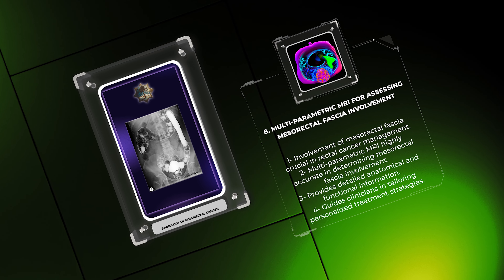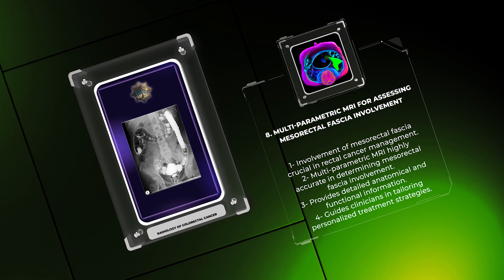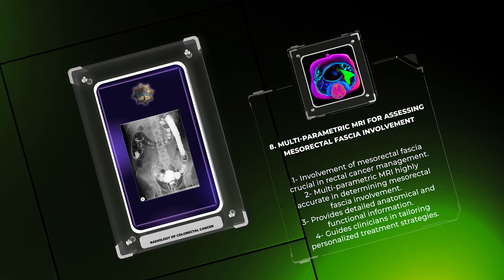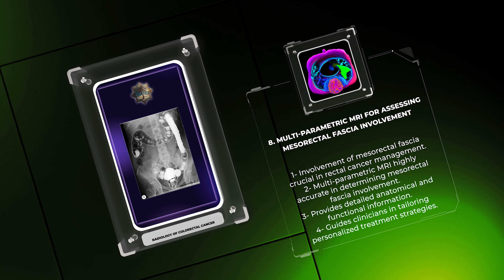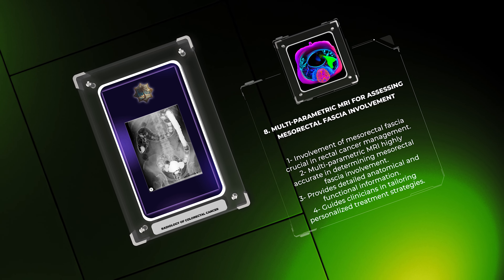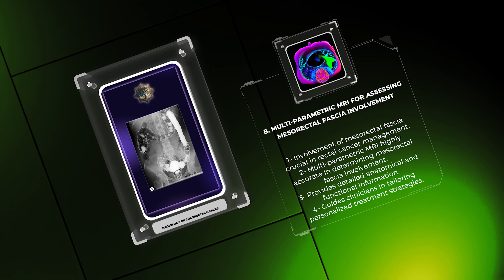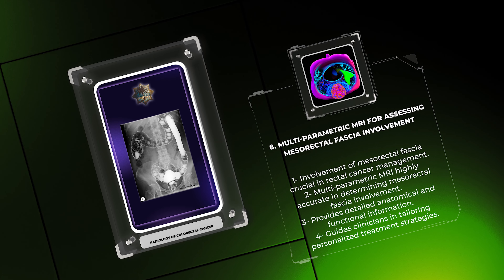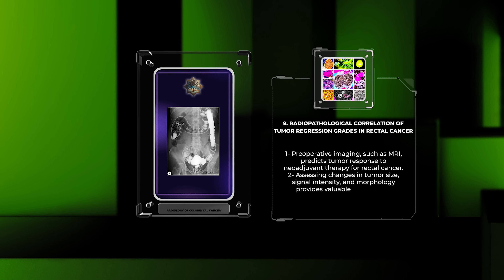The involvement of the mesorectal fascia is a crucial determinant in the management of rectal cancer. Accurate assessment of mesorectal fascia involvement is essential for surgical planning and predicting the risk of local recurrence. Multi-parametric MRI, including T2-weighted imaging, diffusion-weighted imaging, and dynamic contrast-enhanced imaging, has proven to be highly accurate in determining mesorectal fascia involvement, guiding clinicians in tailoring personalized treatment strategies.